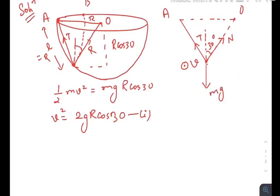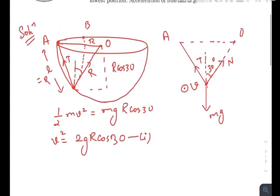Now using the concept of circular motion, we can write that the net force towards the center will be equal to m V squared by the radius of the circular path.